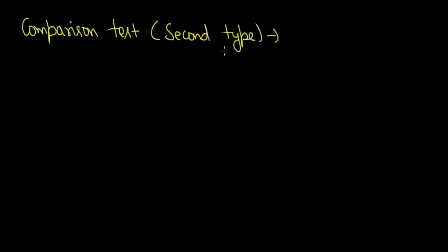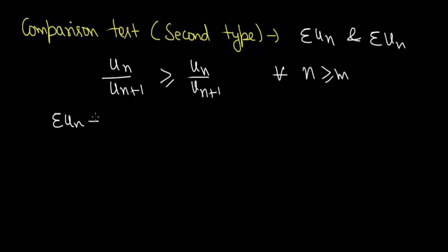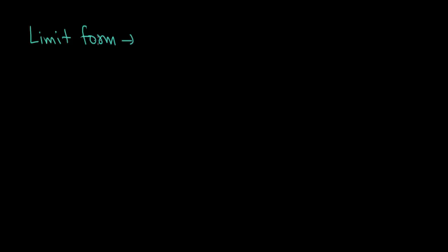In the comparison test of second type, we again have two positive term series sigma uₙ and sigma vₙ. If uₙ/uₙ₊₁ ≥ vₙ/vₙ₊₁ for every n ≥ m, then if sigma vₙ is convergent, sigma uₙ is also convergent; and if sigma vₙ is divergent, sigma uₙ is also divergent.